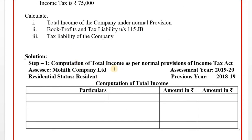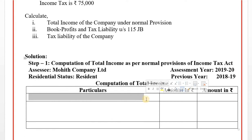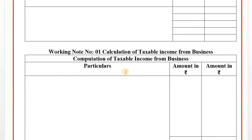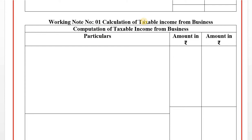Step No. 1: Computation of total income as per normal provisions of Income Tax Act. Assessee: Mohit Company Limited. Residential status: Indian company, always resident. Assessment year 2019-20, Previous year 2018-19. There are no house property income details. Income from business - taxable income from business will be calculated in Working Note 1.